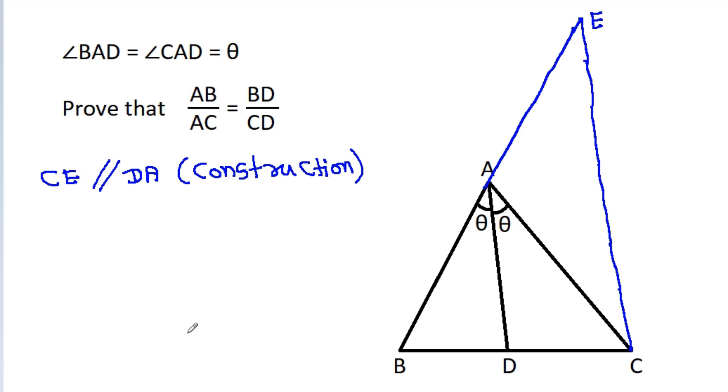Then, we have AD and CE, they are parallel. That means these two angles will be equal. And this angle is theta, so this angle will also be theta. And also, these two angles will be equal. This angle is theta, so this angle will also be theta.